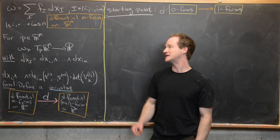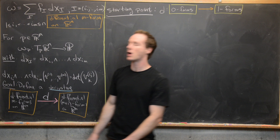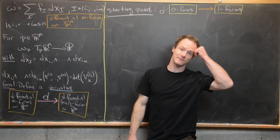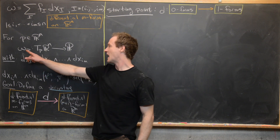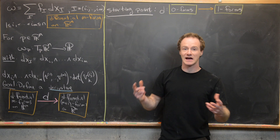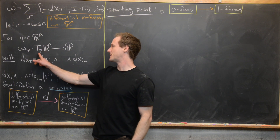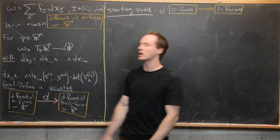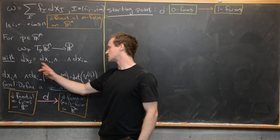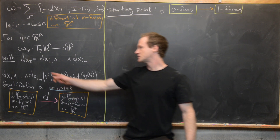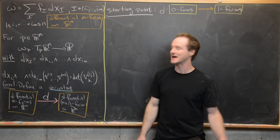This differential M-form has a two-stage evaluation. The first thing you do is plug in a point from Rn, which turns the differential M-form into just an M-form — generally called omega_P — and that is an alternating multilinear map from the tangent space T_P(Rn) down to the real numbers. The dX_I's are described by dX_I = dX_{i₁} ∧ ... ∧ dX_{i_M}.